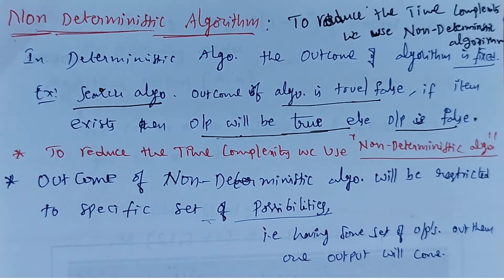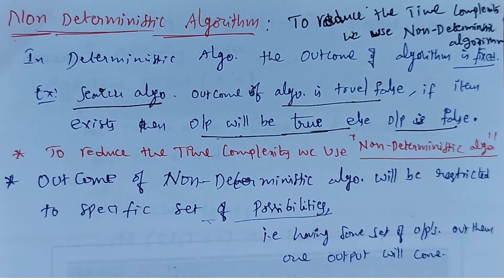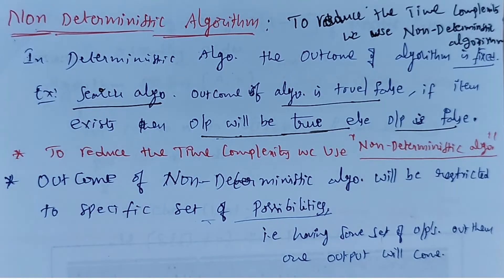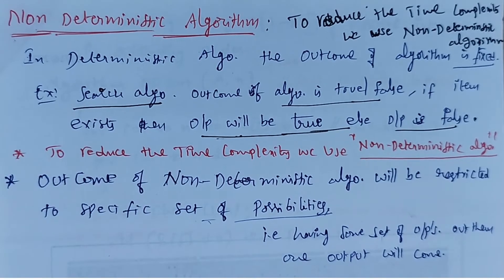For example, a searching algorithm — searching is nothing but searching a particular element or a key. If you search the same algorithm any number of times with the same key, then the result is also the same. If the key is found, it will display that the required item exists and the output will be true, else it returns false.